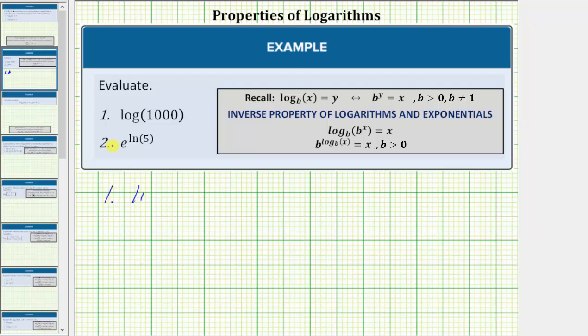For number one we have log 1,000. Notice how the base of the log is not given, which means this is common log or log base 10. So log 1,000 equals log base 10 of 1,000.